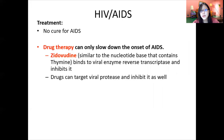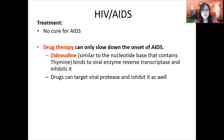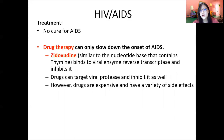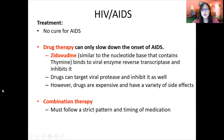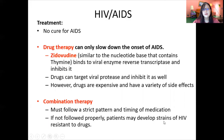Drugs can also target viral protease and inhibit it, so that viral proteins cannot be processed or cleaved to form new viruses. Because AIDS is hard to combat, doctors advise combination therapy — taking multiple drugs at the same time to slow down the onset of AIDS even more — and there must be a strict pattern and timing of medication. Patients may also develop strains of HIV that are resistant to drugs, so the drugs may stop working.